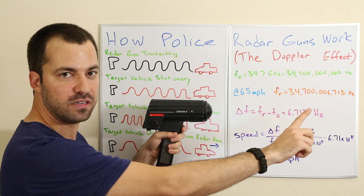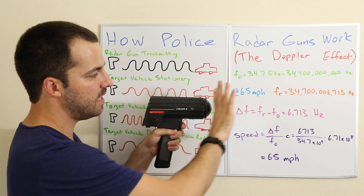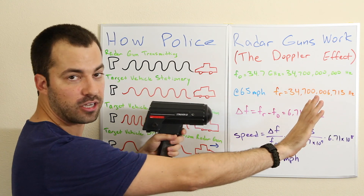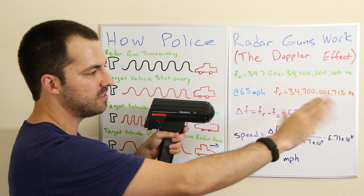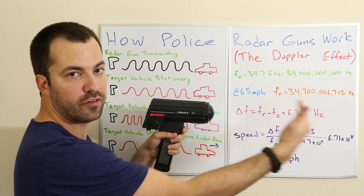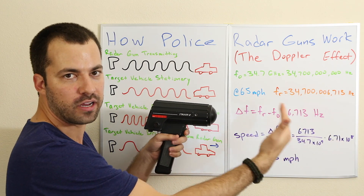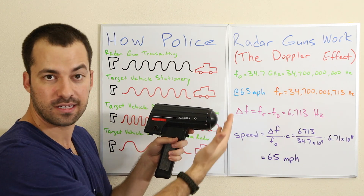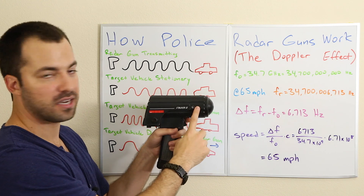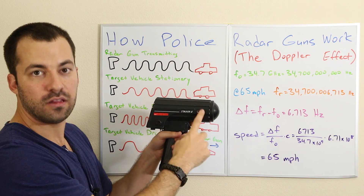It travels out at the speed of light. It's then going to hit my target, which is going to be another car. It's going to reflect off that car and travel back to the radar gun, again at the speed of light, and it's going to be picked up here.